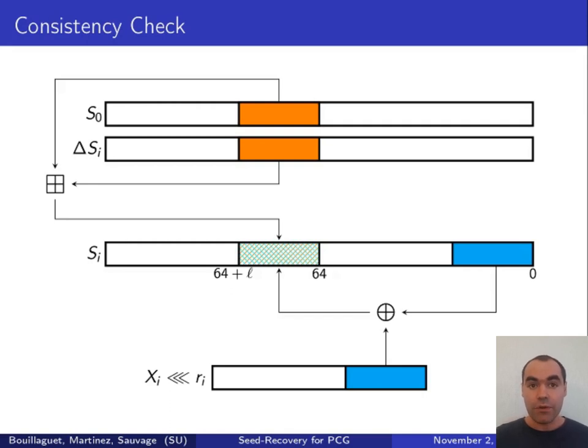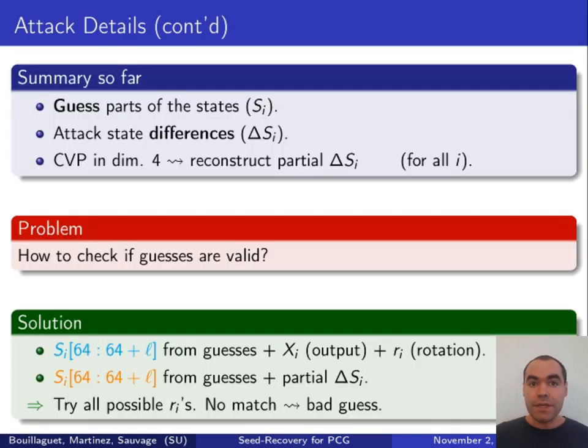So this requires knowledge of the i-th rotation that we don't have. But we can just try all the 64 possible values. If there is no match, then we know that our guesses are wrong. And we can do that for any value of i. So in fact, it's a very powerful consistency check, and it discards all wrong guesses immediately.